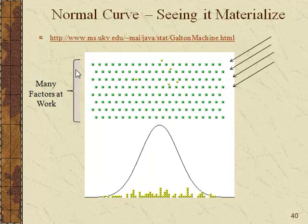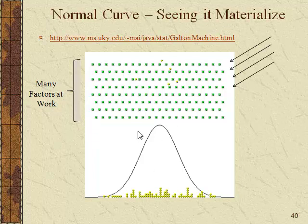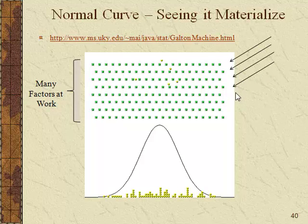The key takeaway is that many factors are at work in systems that produce a normal curve. You can think of each row as a different factor — if this were IQ, maybe one kind of genetic factor, another genetic factor, an environmental factor for young babies, the kind of cognitive stimulation they get, how loved they are, and all the other things that might eventually filter into affecting someone's IQ level.